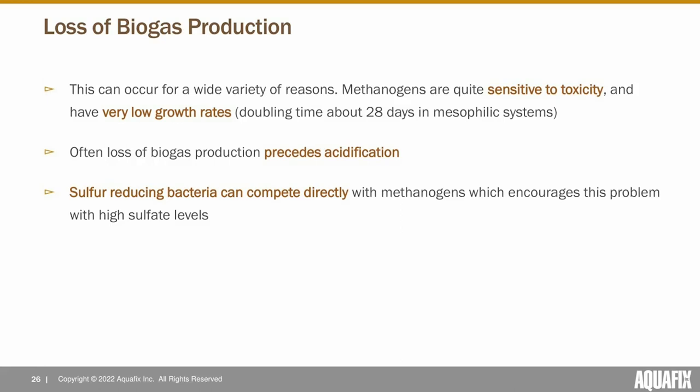Loss of biogas tends to precede acidification, making it a very sensitive indicator of an upcoming upset. But it doesn't always result in acidification — if you have large clumps of solids entering the system, disintegration and hydrolysis can be the rate-limiting step, meaning you're not producing volatile acids and your digester isn't likely to be upset. Sometimes you'll also see competing organisms like sulfide-producing bacteria start to overgrow, outcompeting methanogens and using similar food substrates, which can starve out the methanogens without causing a pH drop.